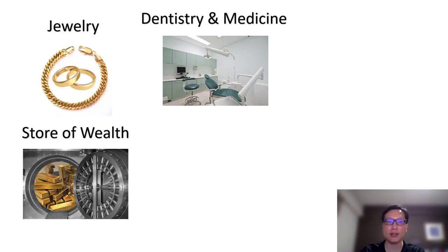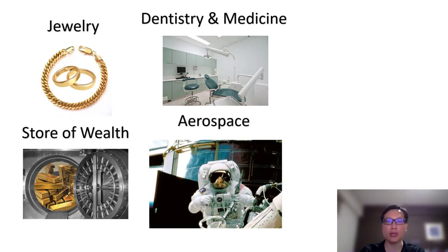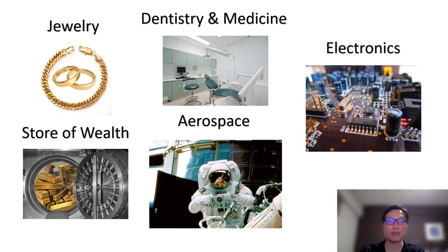Gold is also used in medicine, in salt or radioisotope forms which are taken orally or via injection, and it can also be used in cancer treatment. Gold plays a vital role in the aerospace industry to lubricate various mechanical parts, in circuitry to conduct electricity, and also to coat the interior of spacecraft to protect astronauts from radiation and heat. And because gold is a dependable conductor and doesn't corrode, it is perfect for use in electronic circuitry, so you can find a small amount of gold in almost all electronic devices today.